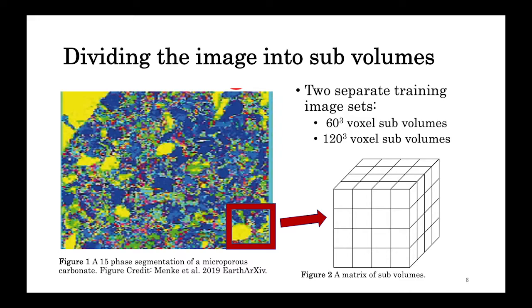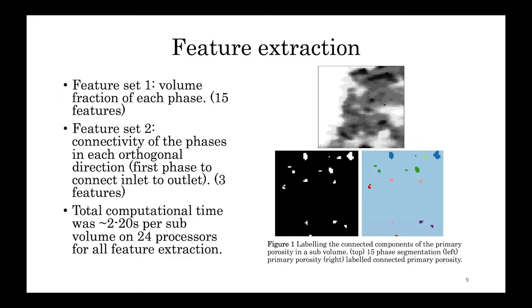Note that the subvolumes overlap, so that's where you're able to get the same number of images, even though the second set had volumes that were four times as big.